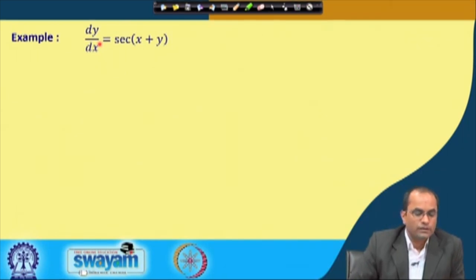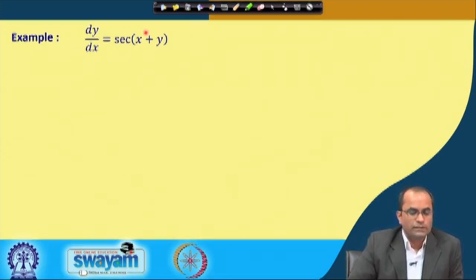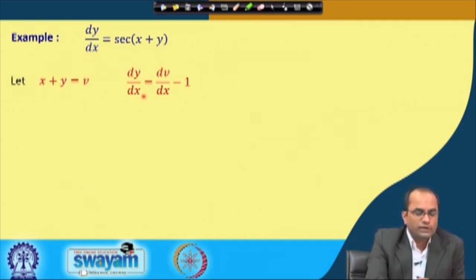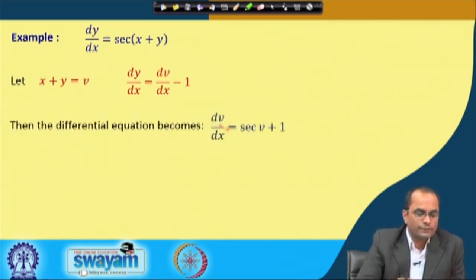We take this example: dy/dx = sec(x + y). This equation as given is not separable, because we cannot bring all x-terms to one side and y-terms to the other. So we use the substitution: let v = x + y. Then differentiating, 1 + dy/dx = dv/dx, so dy/dx = dv/dx − 1. We substitute this change from y to v into the given equation, replacing dy/dx to get dv/dx − 1 = sec(v).